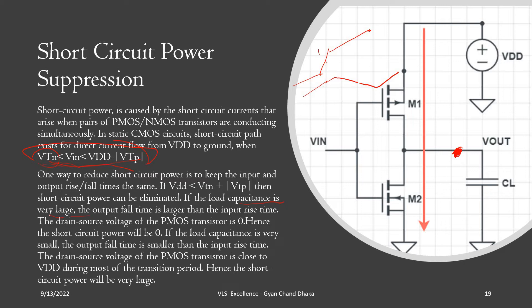When the input voltage is going from 0 to high, the output voltage takes some time before going from high to low because of the large capacitance at the output load. At this point, the output load voltage is essentially the source voltage of the PMOS transistor, while the drain voltage is VDD, and this source voltage is also close to VDD. Since both voltages are nearly equal, there is no significant current flow, meaning there will be no or very little short circuit power.